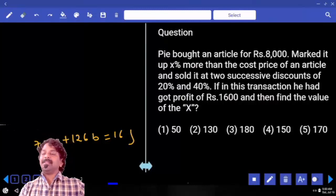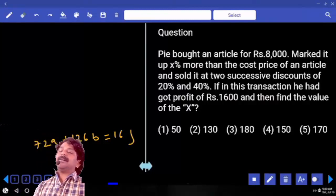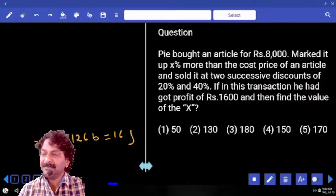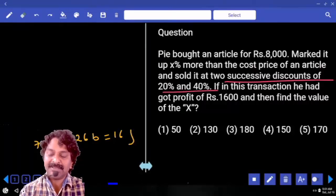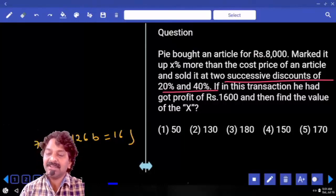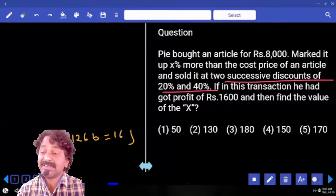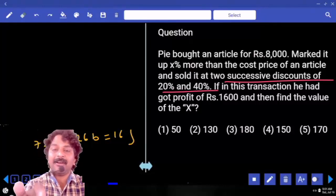Pai bought an article for 8000 and marked it up X percent more than its cost price and sold it at two successive discounts of 20 percent and then 40 percent. If in this transaction he had got profit of 1600, then find the value of X.